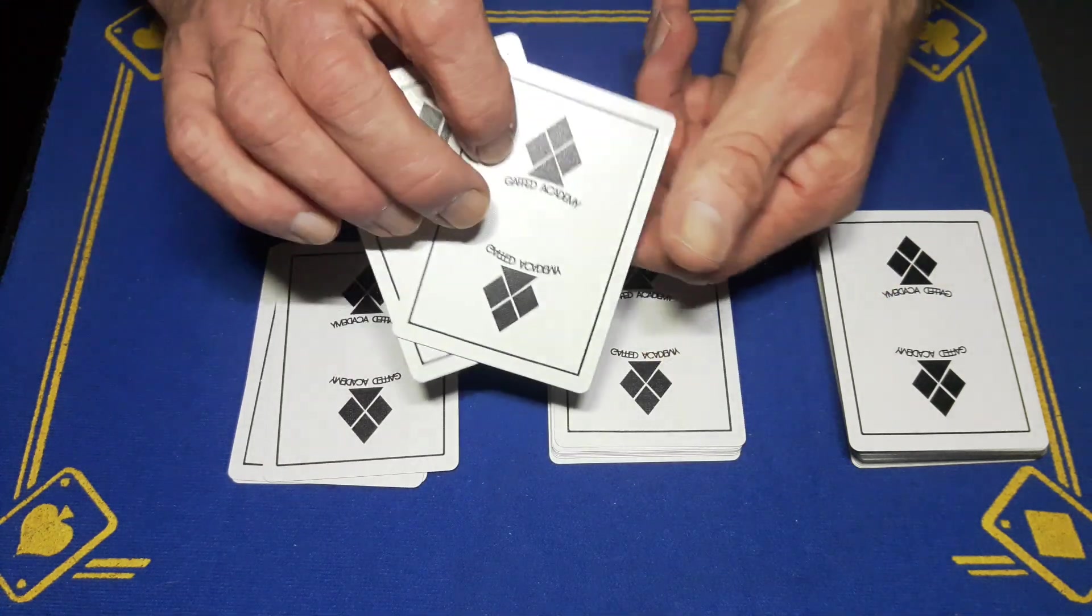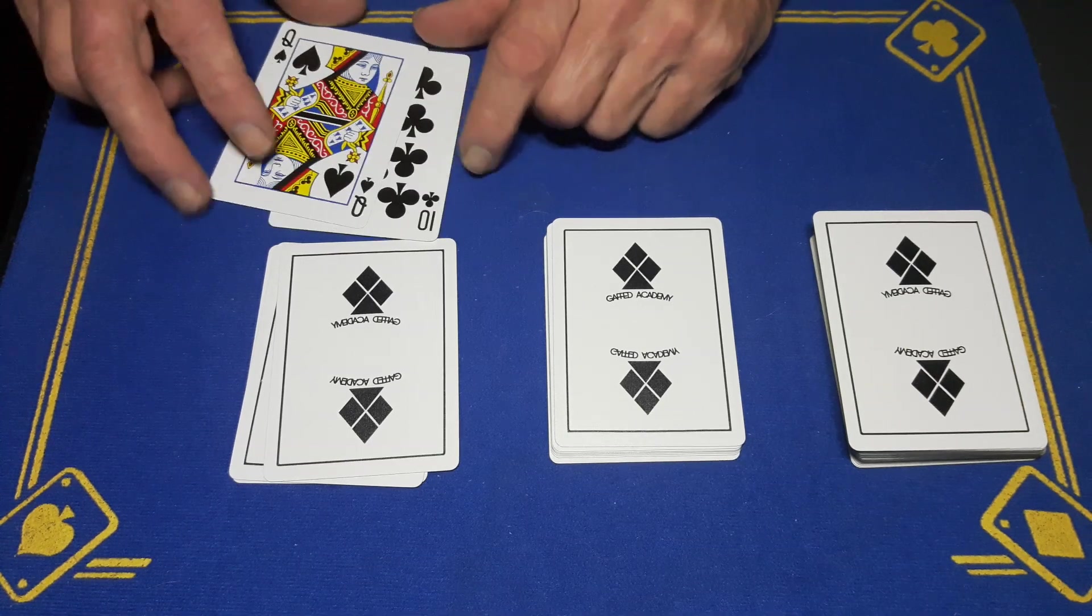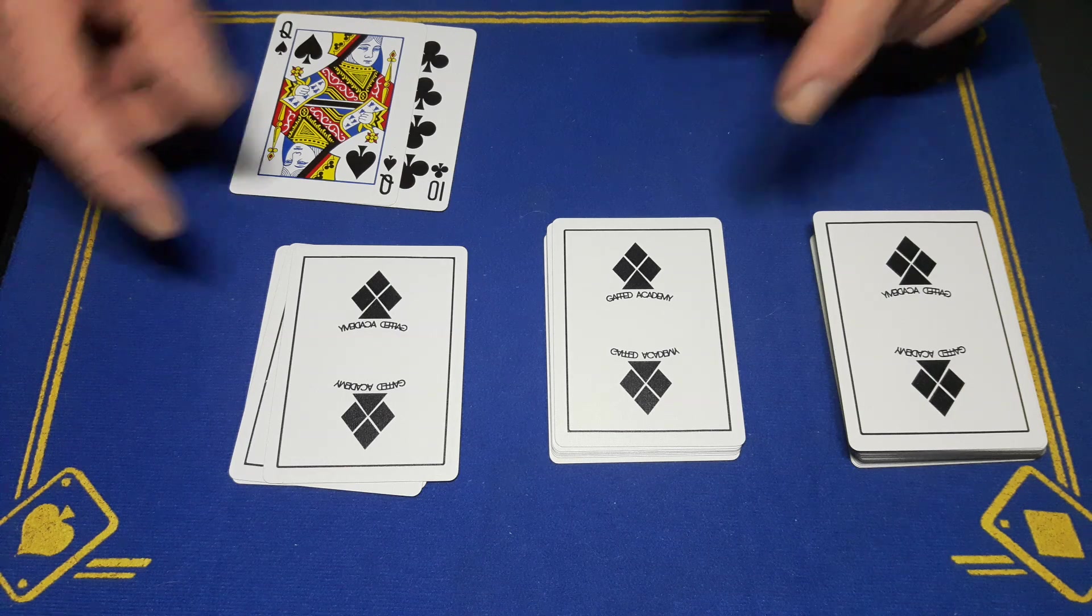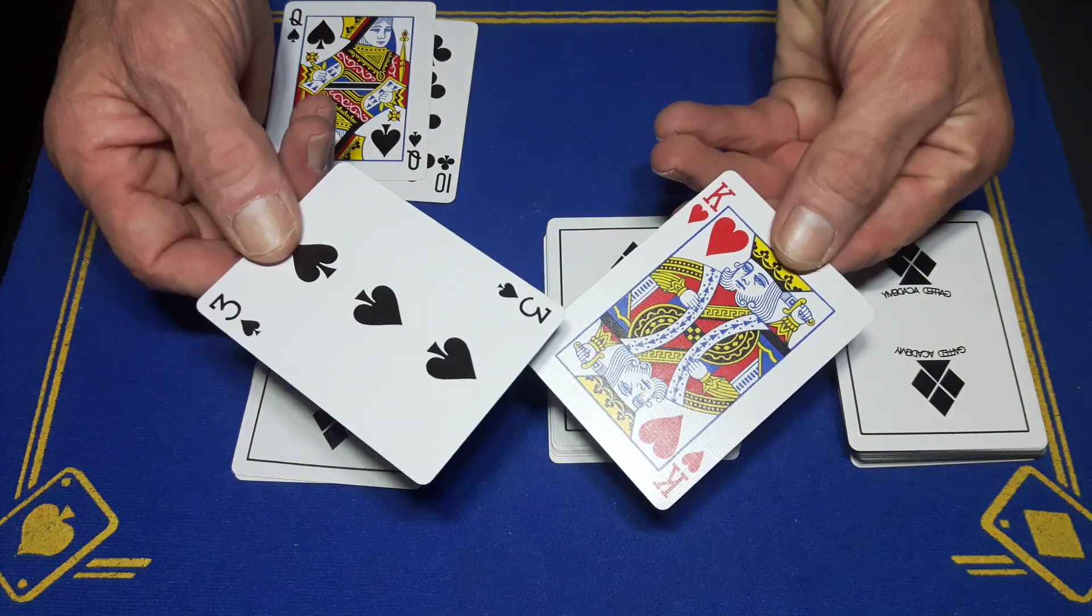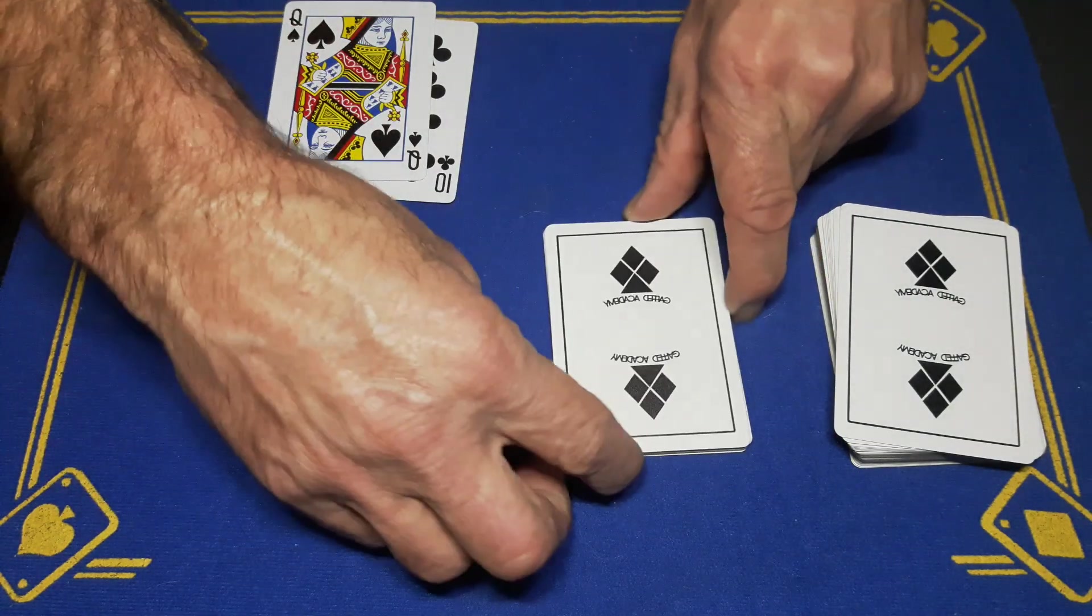And then just turn these two cards over. You can leave these as a mystery or you could turn them straight over, whatever you like. And say to your spectator, we have landed on the ten of clubs and the queen of spades. Now had you have called a different number, it is possible we could have landed on either one of these cards.